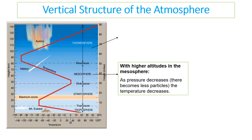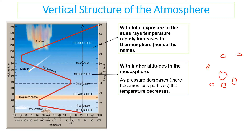We then go into the mesosphere, where pressure decreases so there are fewer and fewer air particles. At lower altitudes the particles are close enough together for heat to transfer by conduction, but as you go up they become fewer and farther between, so the temperature drops. Finally, in the thermosphere, the temperature suddenly increases because we are completely exposed 100% to the Sun's rays. The name 'thermosphere' itself means 'warm sphere.'